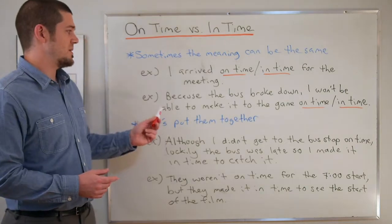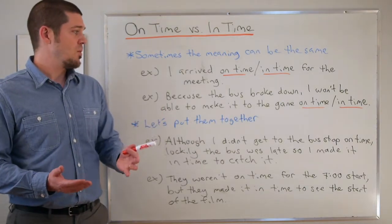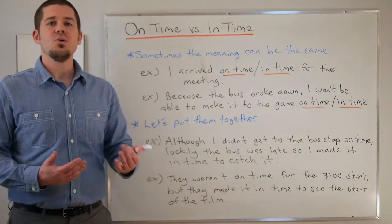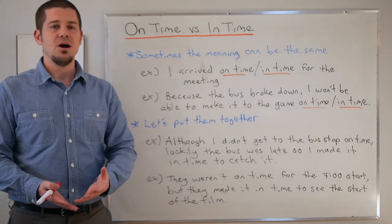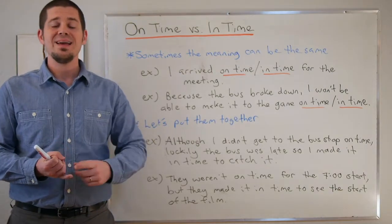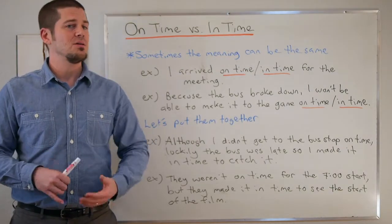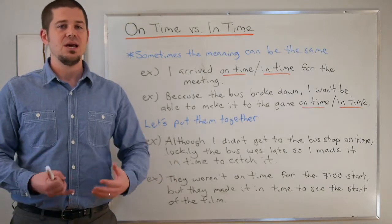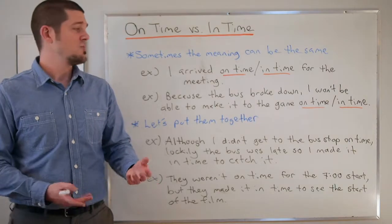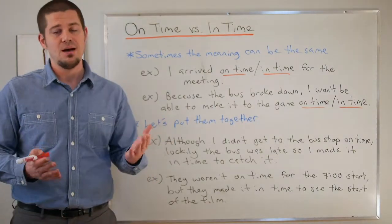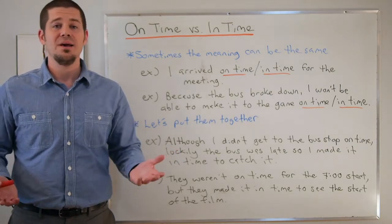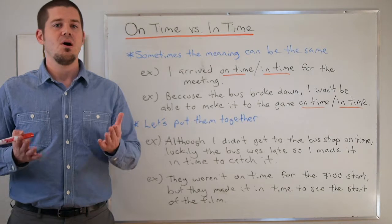Another example where they're interchangeable: 'Because the bus broke down I won't be able to make it to the game on time or in time.' Imagine the game starts at six o'clock. My bus broke down so I'm not going to get there by six. Even if the game starts a little later — at six-ten or six-fifteen — I won't be there by then either. So both 'on time' and 'in time' are accurate here; it won't make a difference which one you use.